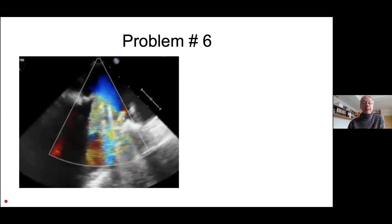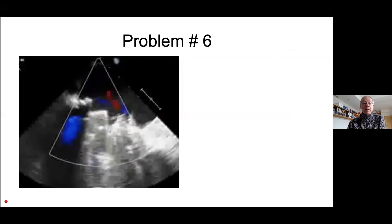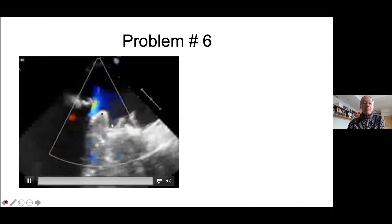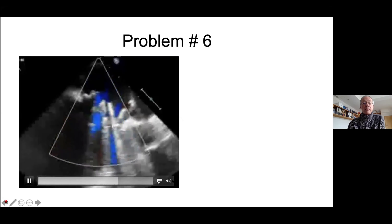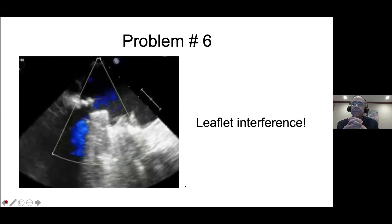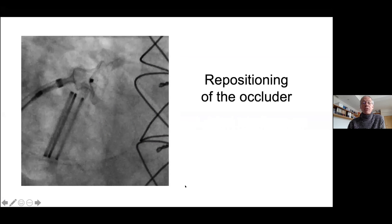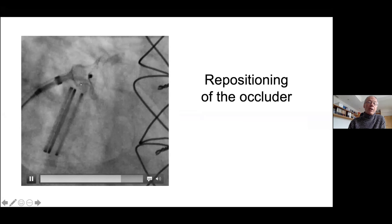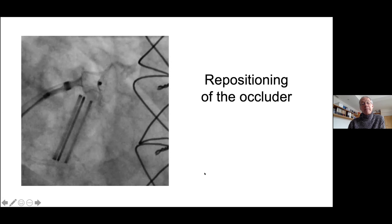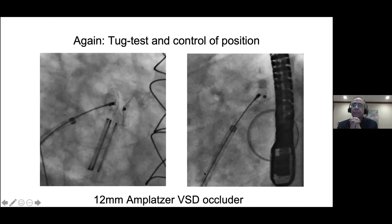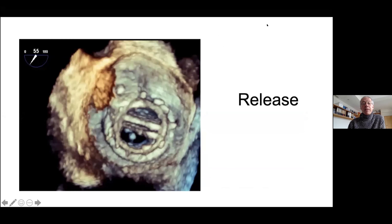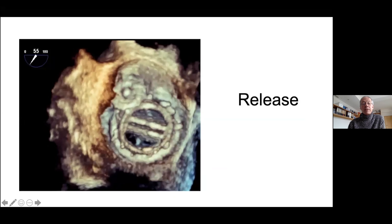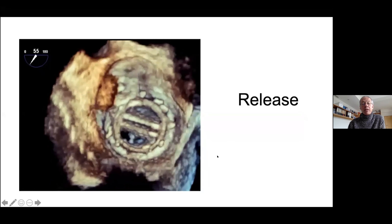But then we have problem number six. You can see on echo here — this leaflet got stuck. This one is moving, but now this one got stuck. That's something you should not leave. It was still connected, fortunately, so I just pulled it a little bit stronger into the defect and redeployed it. This is now a tug test again to confirm the position and stability of the device. Then the device is released, and you see the leaflets are moving freely. That looks good.